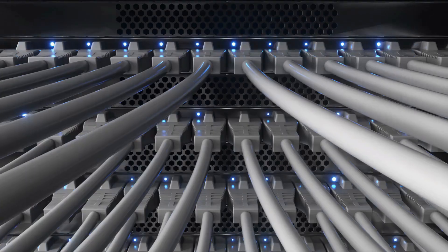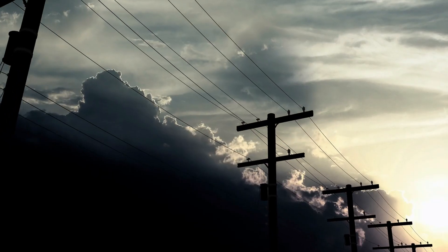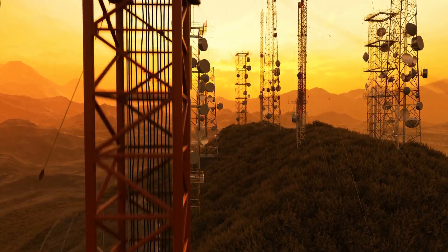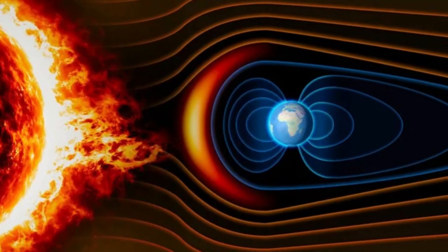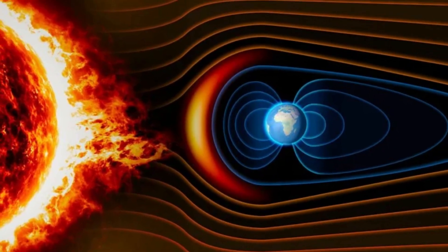But since 1859, humanity has put up a lot more long wires. Telephone and internet cabling, power grids, and even some radio antennas are long enough to pick up energy from such a storm. So if we saw a repeat of that event today, we'd be in some serious trouble.